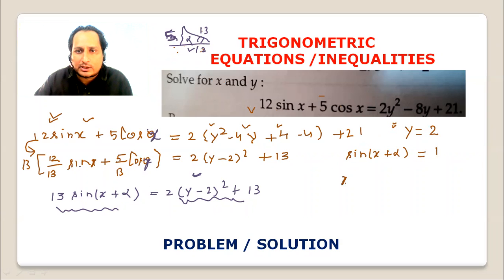So x plus alpha equals K pi plus pi by 2, where K belongs to integers. This is the general solution.